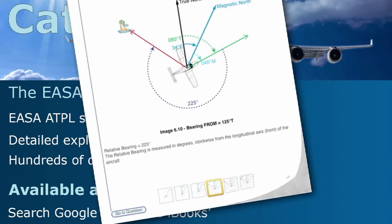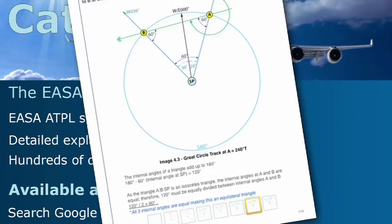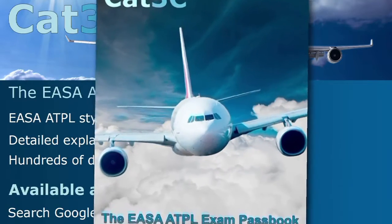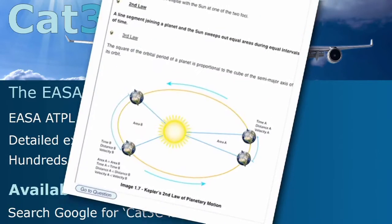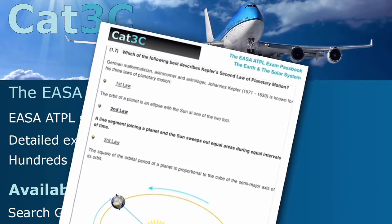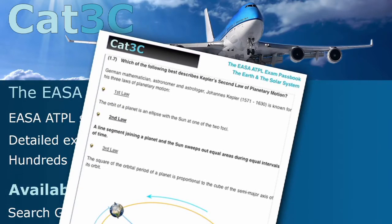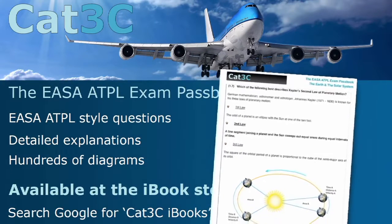The passbooks contain hundreds of exam-style questions and are supported by clear, in-depth explanations and interactive diagrams. The link to the iBooks can be found on the webpage below or at the Cat3C website at the Bookstore tab.